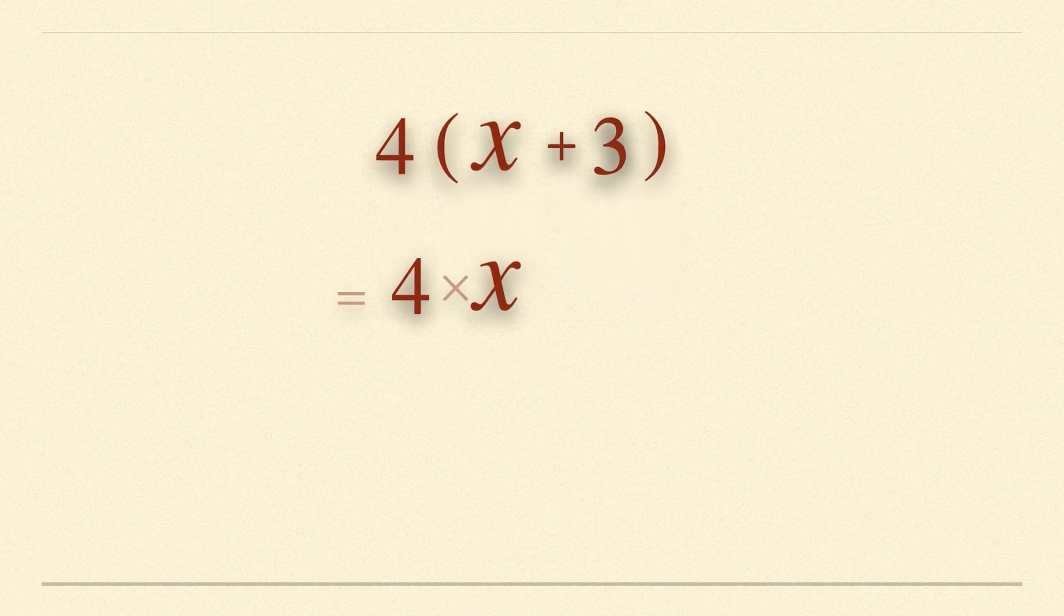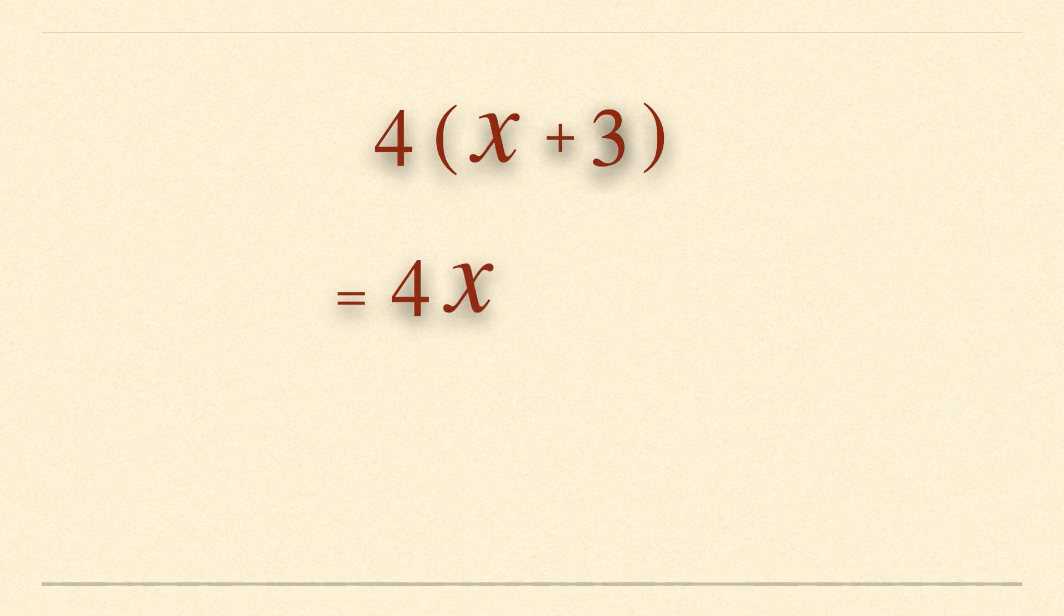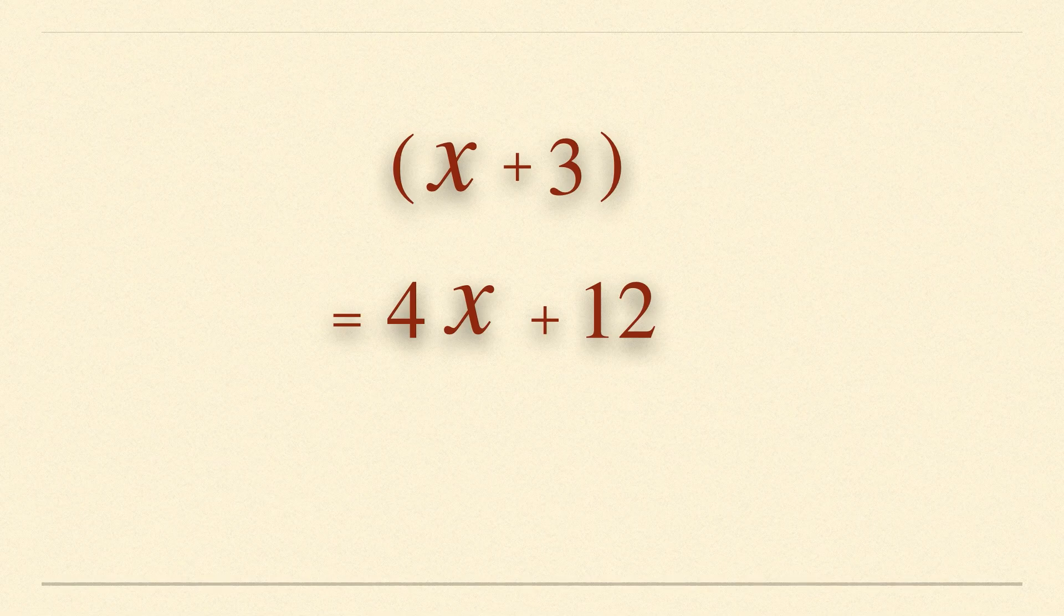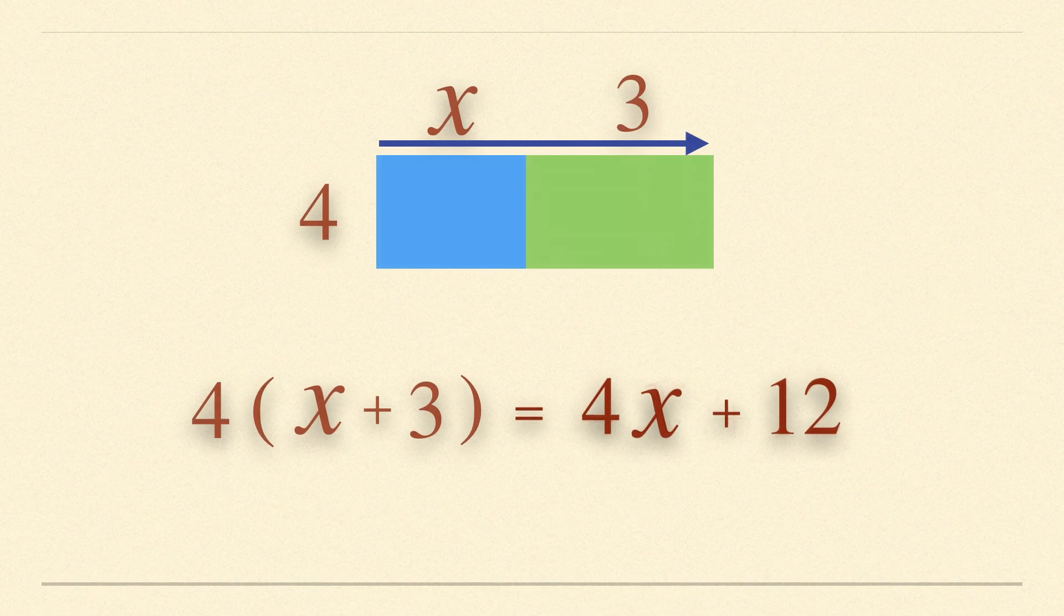First multiply 4 with x to give 4x, then multiply 4 with plus 3 to give plus 12. The bracket is now fully removed and it has been opened to give the expression for the area of the shape.